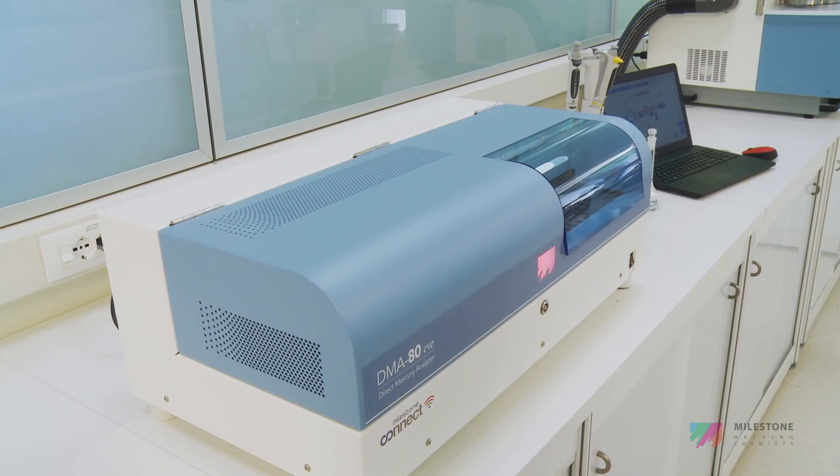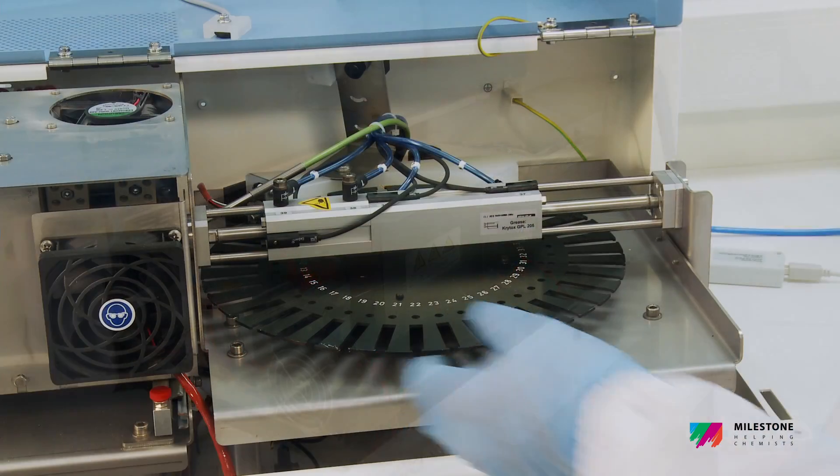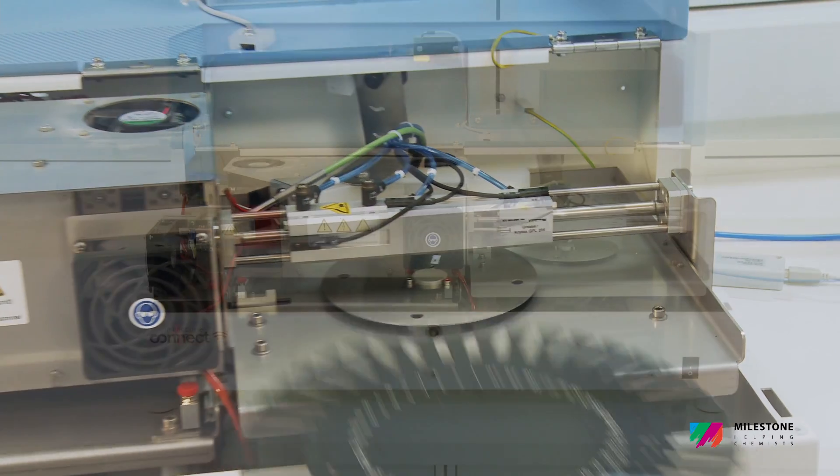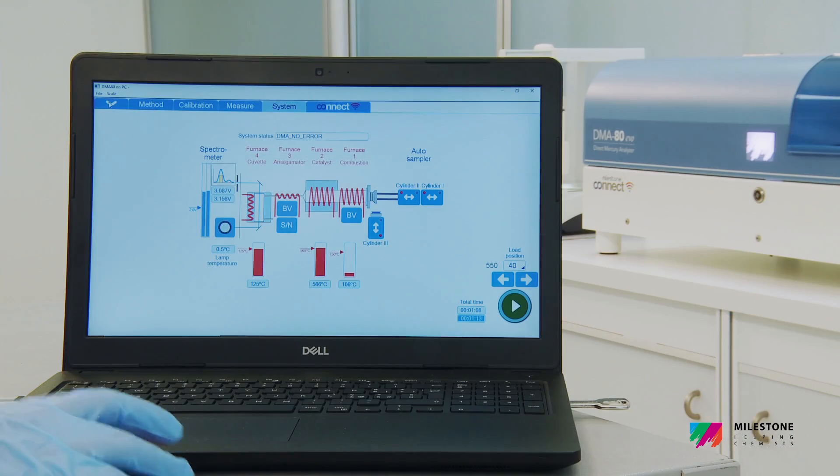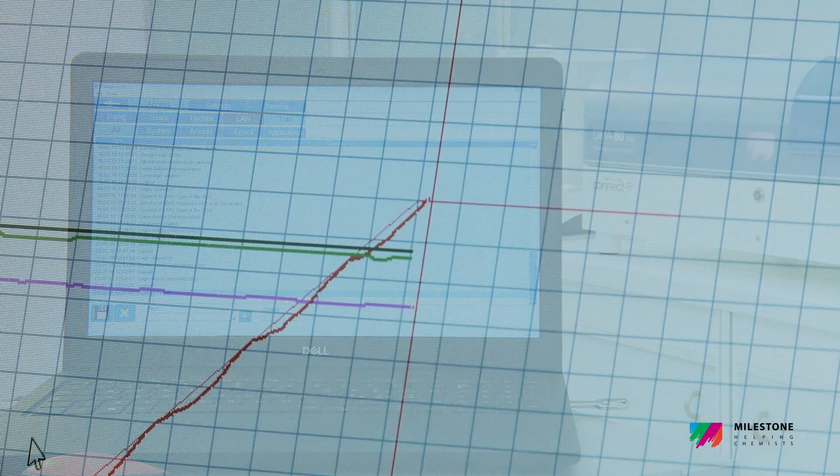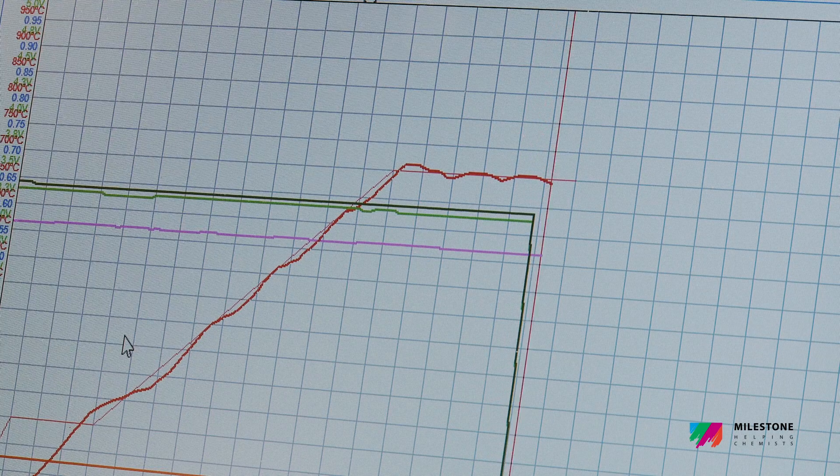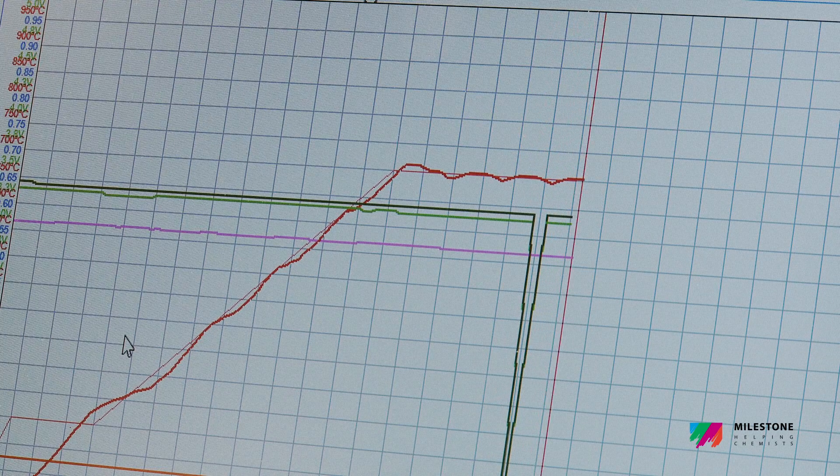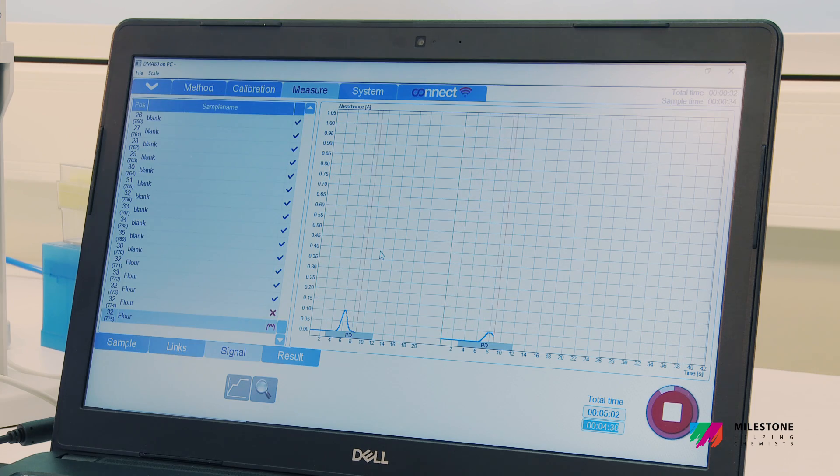The DMA80 EVO is an easy-to-maintain system, which offers low running costs. Its advanced components, such as the catalyst and amalgamator, are synonymous with reliability, ensuring the same quality over and over again. The DMA80 EVO runs perfectly with either compressed air or oxygen as a carrier, providing additional savings to the lab without compromising performance.